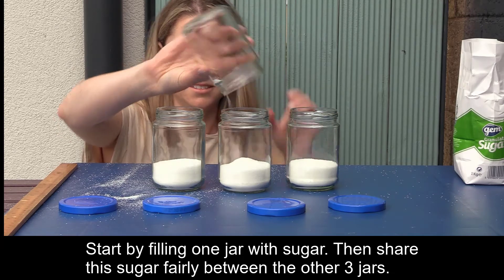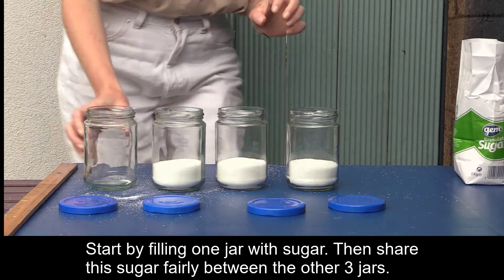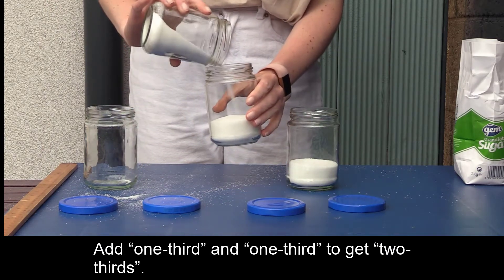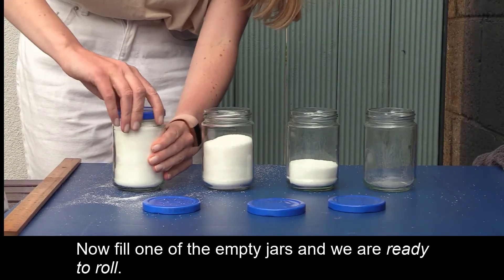Start by filling one jar with sugar. Then share this sugar fairly between the other three jars. Add one third and one third to get two thirds. Now fill one of the empty jars and we are ready to roll.